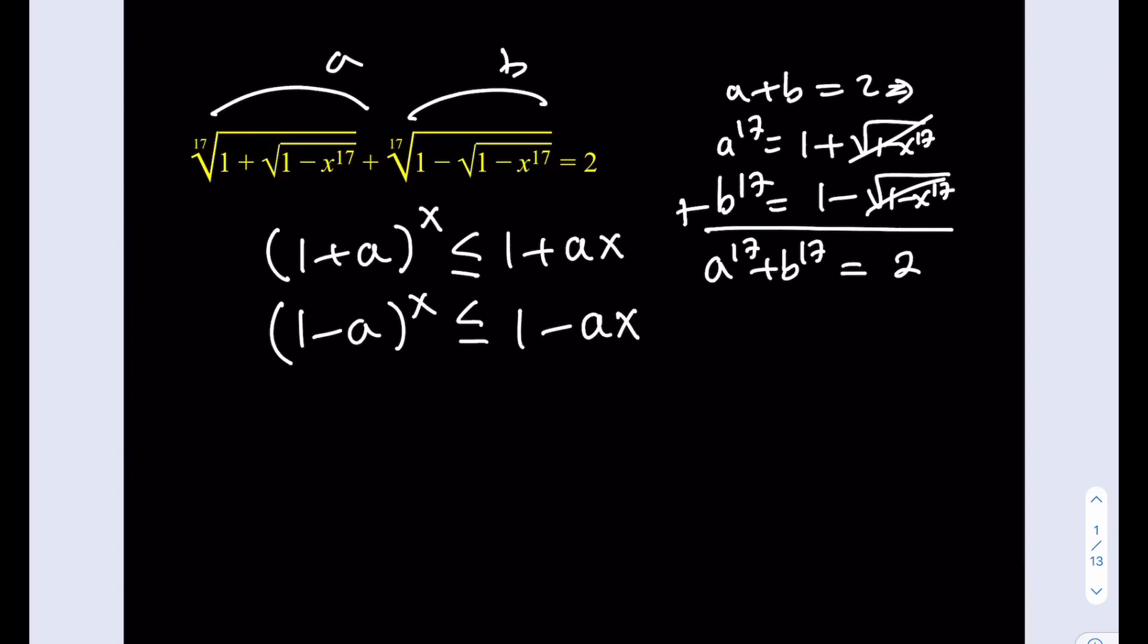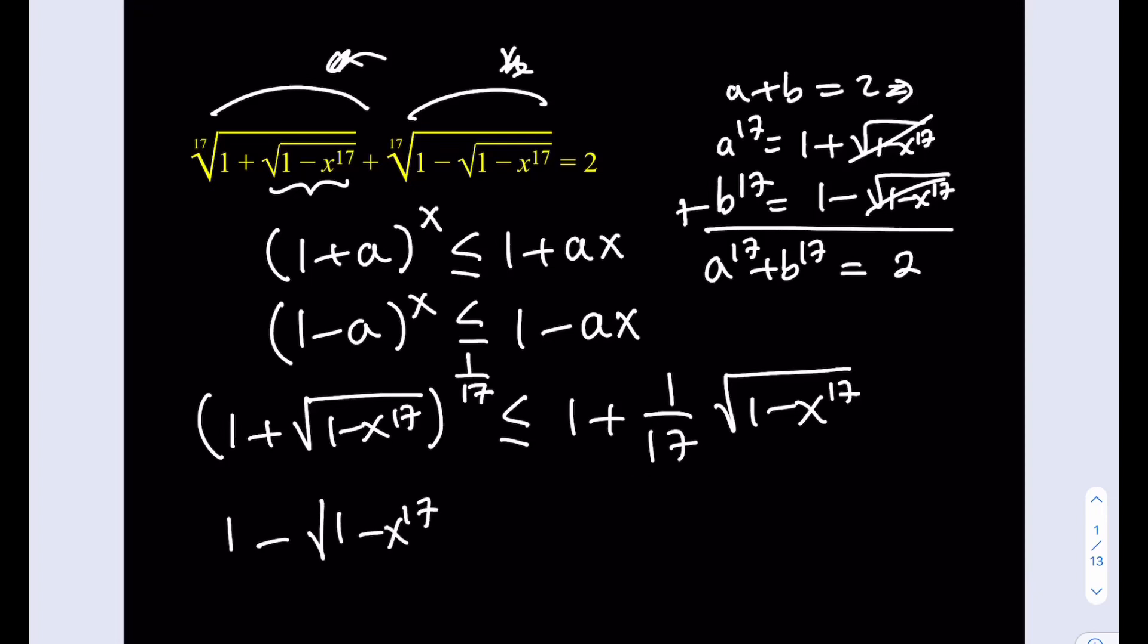Let's just go ahead and proceed with this inequality. Here's what's nice about it. I'm going to take my first expression, which I called a earlier, but forget about these a's and b's now. So this is going to be my a now, and the whole thing is going to be 1 plus, I'm going to write it with an exponent because I'm going to be able to use the Bernoulli's inequality. So this expression right here, based on the first one, is going to be less than or equal to 1 plus 1 over 17 times the square root of 1 minus x to the power 17. And the second part, because it has a minus sign, is going to be less than or equal to 1 minus 1 over 17 multiplied by 1 minus x to the power 17.